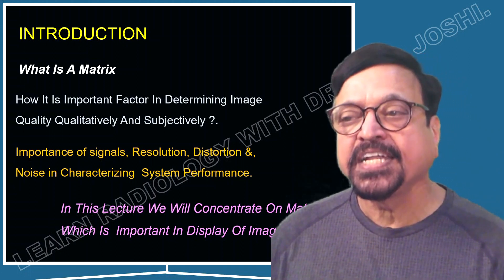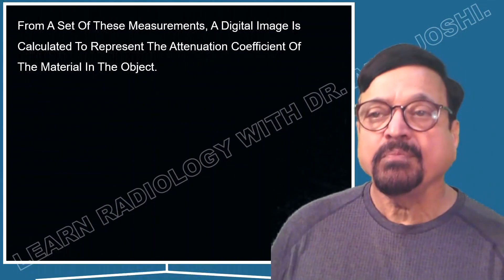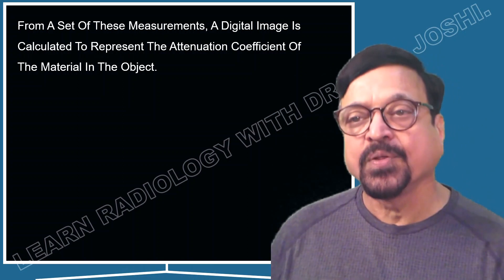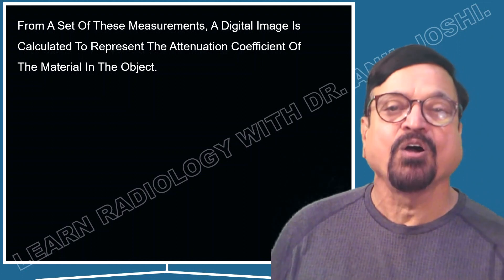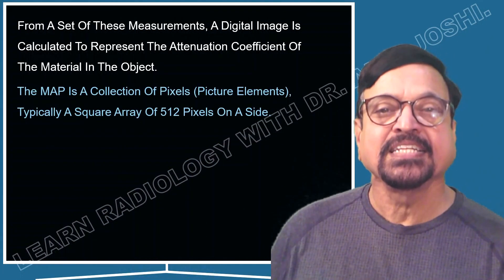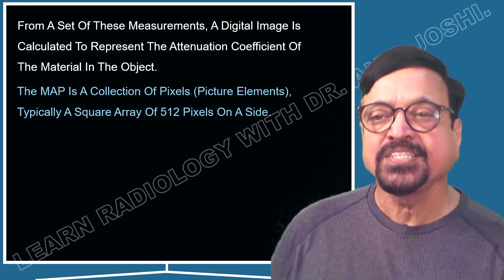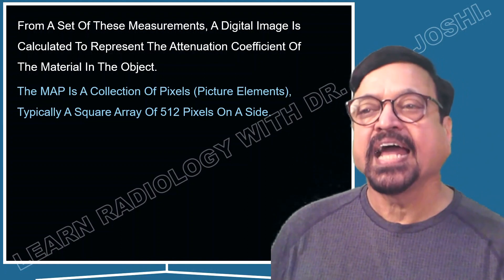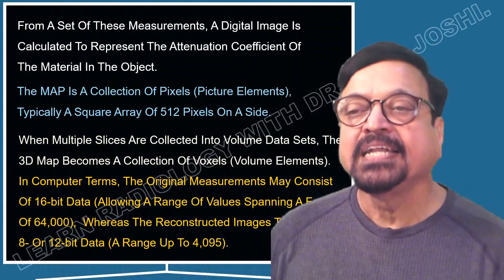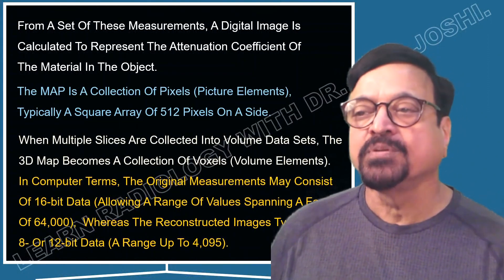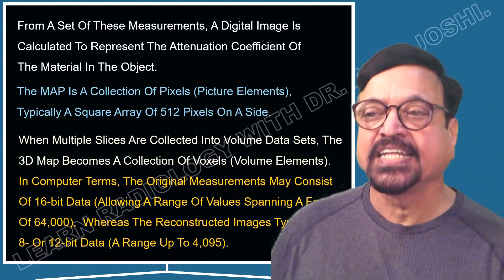In this lecture we concentrate on matrix, which is important in the display of the image. From a set of measurements, a digital image is calculated to represent the attenuation coefficient of the material — or simply the tissue specification. The map is a collection of pixels, typically a square array of 512 pixels on a side. When multiple slices are collected into a volume data set, the 3D map becomes a collection of voxels — the volume elements.